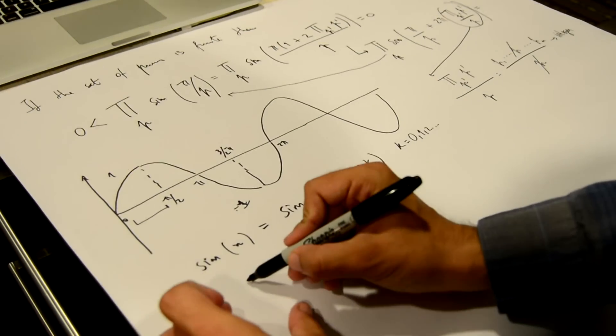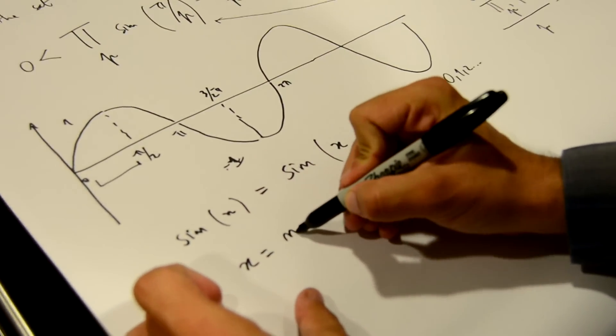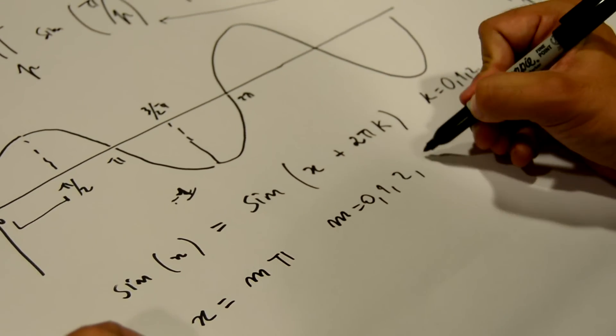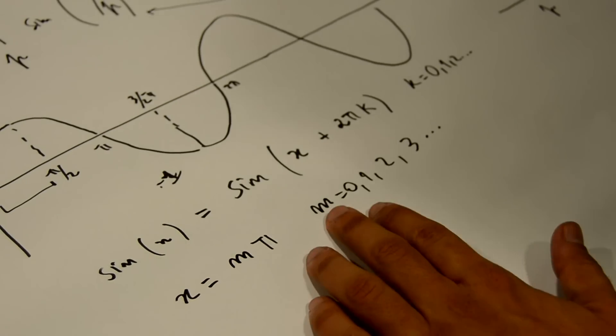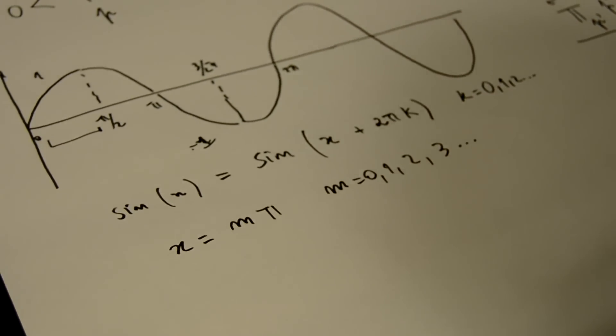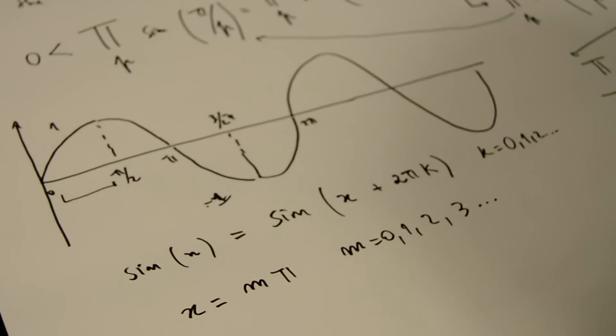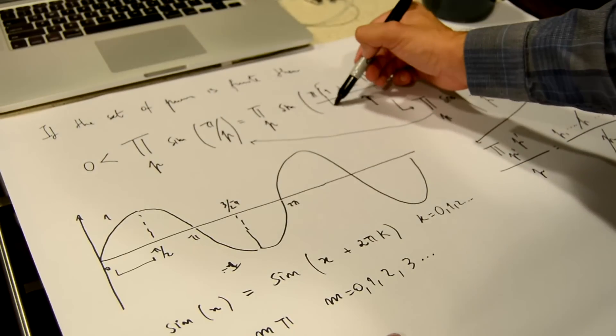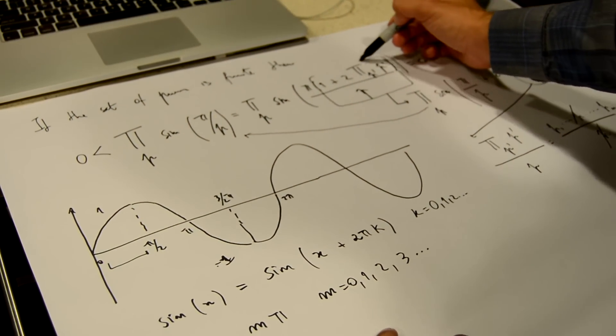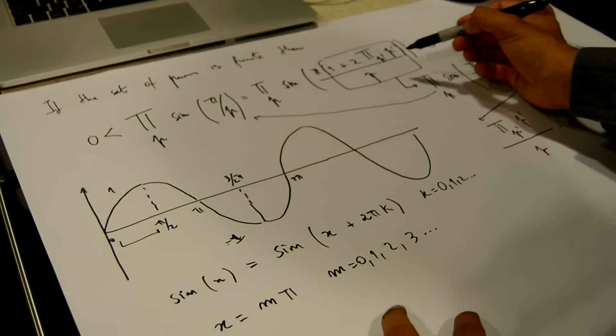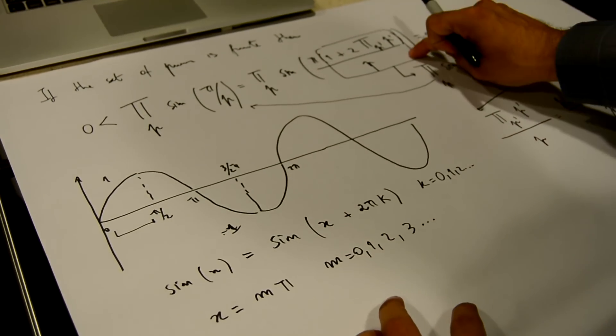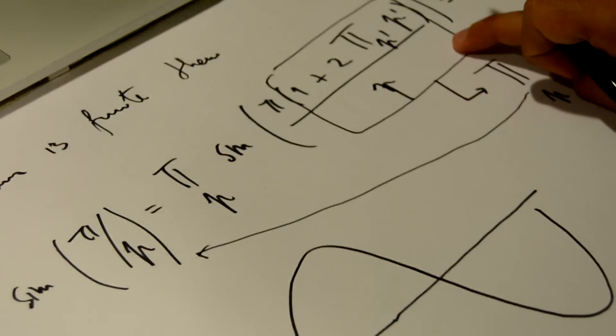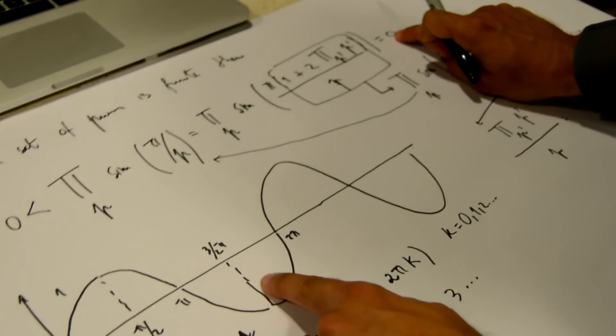So the zeros are all of the form x = mπ with m equal to zero, one, two, three, etc. And so what we need to show is that at least one term in this product is going to be an integer. If we prove this, we prove that the sine of this number times π is a zero of the sine function, so we have the result zero.